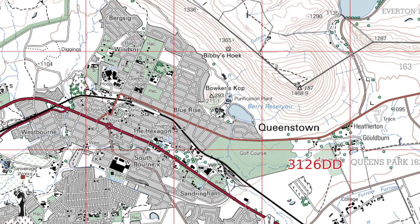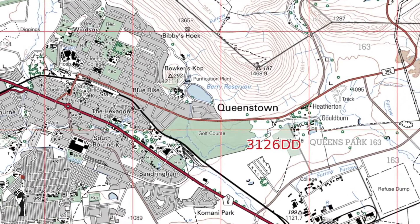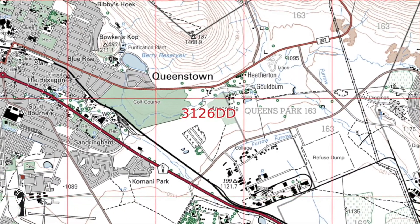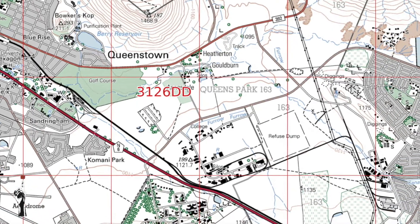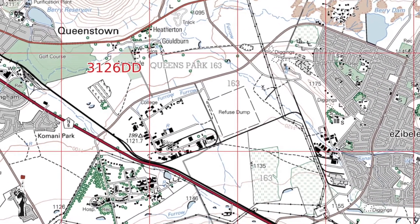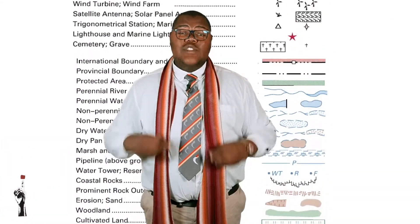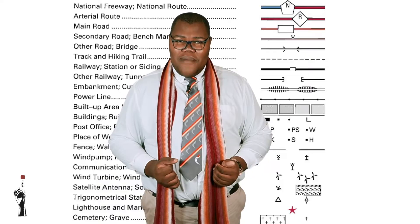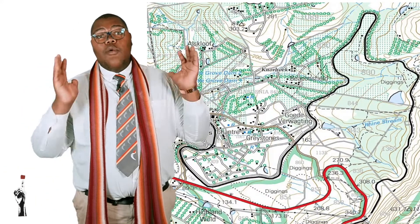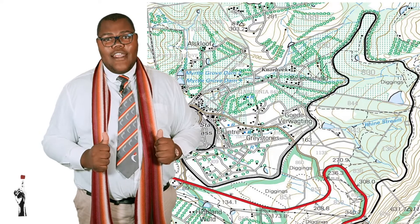Let's have a closer look at topographic maps. These maps show the physical and artificial spatial features of an area, such as buildings, monuments, mountains, valleys, rivers, and other natural and artificial forms. They use symbols as well as colour to convey information. Take a look at the following map where we are going to break down all the information by colour.